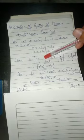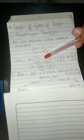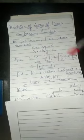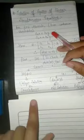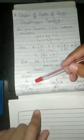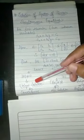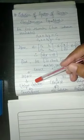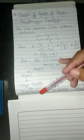So first of all, we find the determinant of A. There are two options: either it is non-zero or zero. If the determinant of A is non-zero, then we say the system is consistent — that is, it has a unique solution.